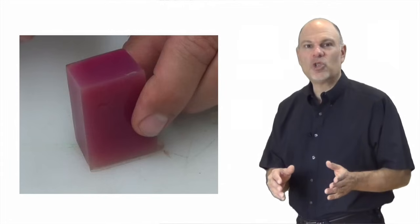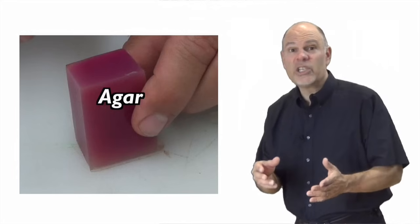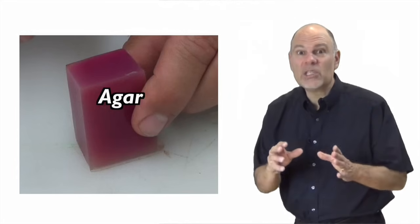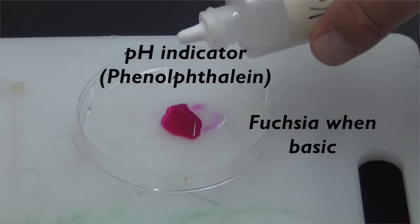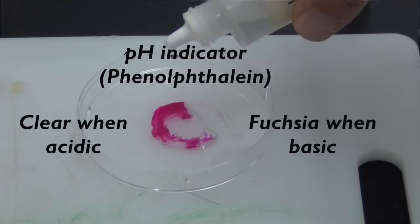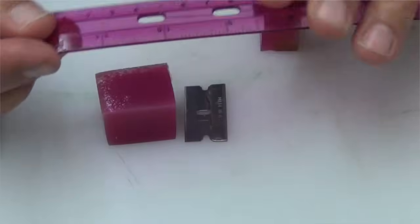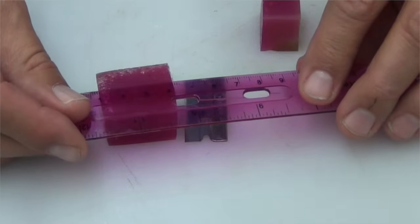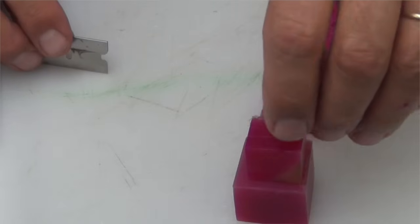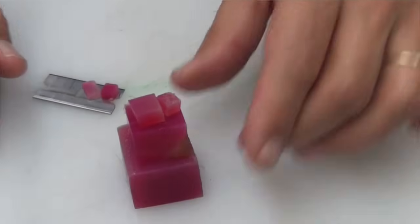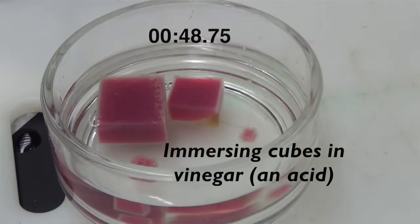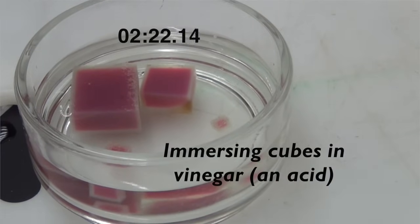Let's start with a demonstration. This block is made of agar, a seaweed extract, a bit of the base sodium hydroxide, and a pH indicator. This pH indicator, phenolphthalein, is this very nice fuchsia color when it's exposed to a base, and it turns clear when the pH turns acidic. I've cut cubes of this agar into four different sizes. The biggest is three centimeters on a side. The others are two, one, and 0.5 centimeters on a side. I'm going to put these cubes into a dish of vinegar, a weak acid. Watch what happens.